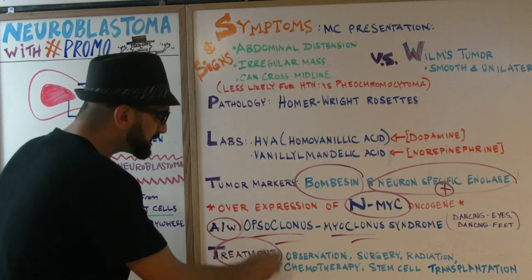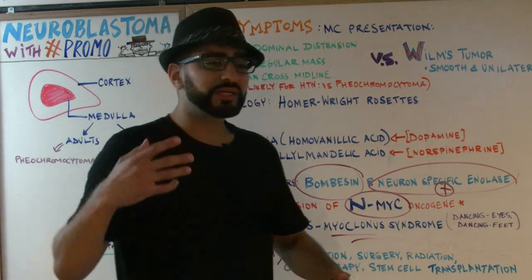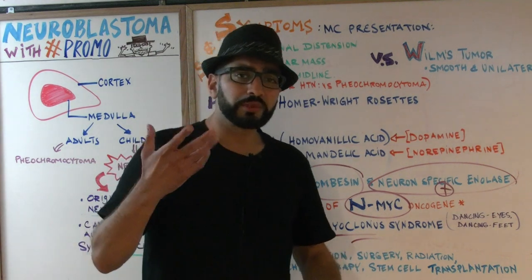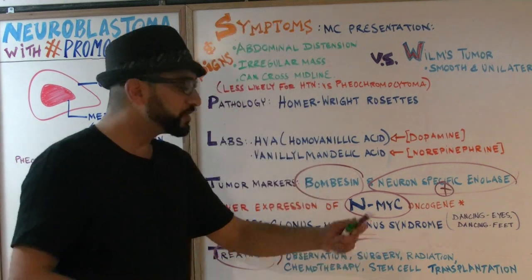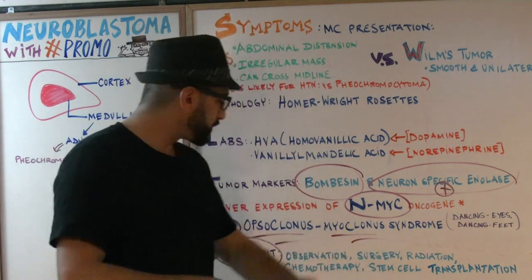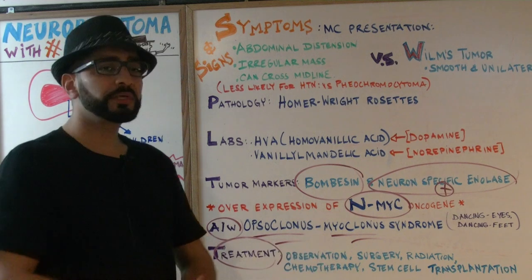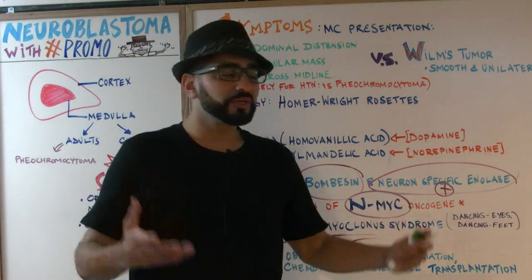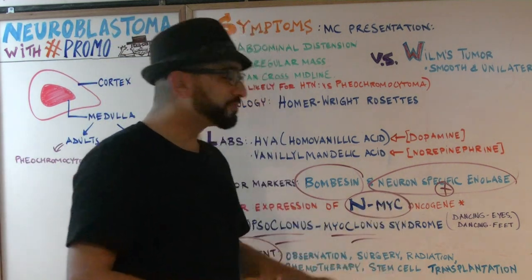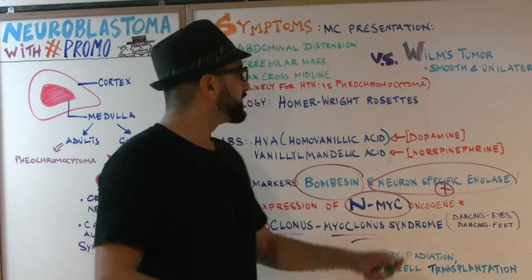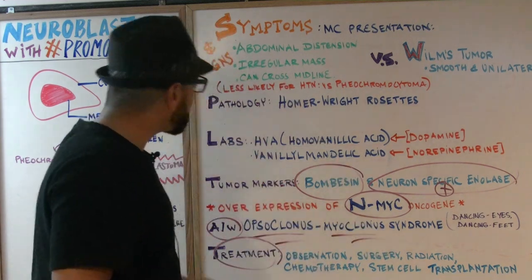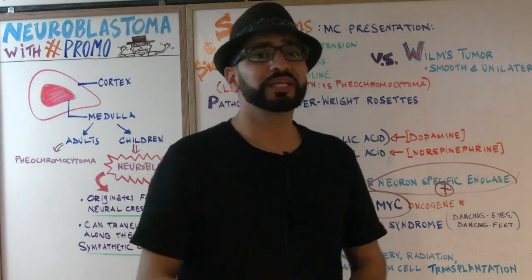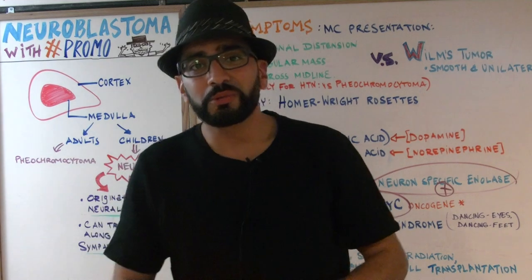Because this is a tumor, treatment options include observation, surgery, radiation, chemotherapy, and eventually stem cell transplantation. This is extra information not heavily tested on Step 1, so focus on the factual details covered above and you'll ace all neuroblastoma questions.